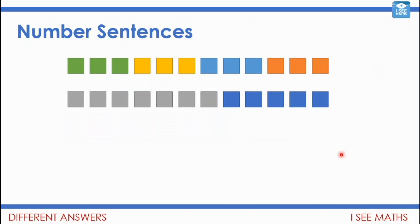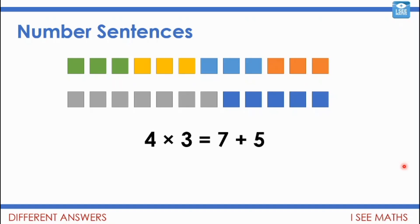Of course, we could use multiplication for the same thing. Have a look at this picture and the groups — we've got sets of three. A way I could describe this is 4 times 3. I've got 4 lots of 3, and that is the same as 7 plus 5, because there are 7 gray and 5 blue — both 12. But if I change that slightly, 4 times 3 is more than 7 plus 3, because 4 times 3 is 12 and 7 plus 3 is just 10. So I use the sign appropriately — the wider side goes towards the 4 times 3.